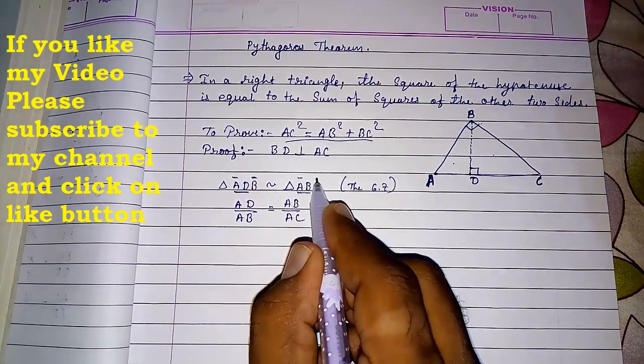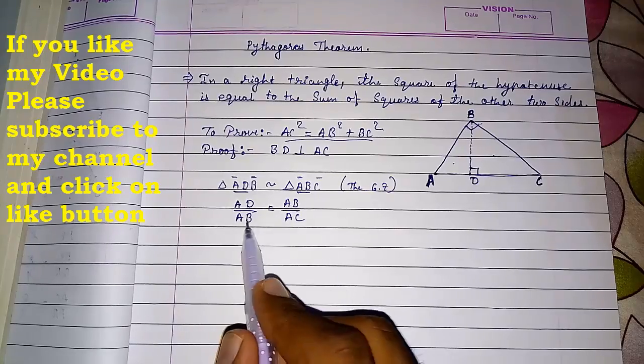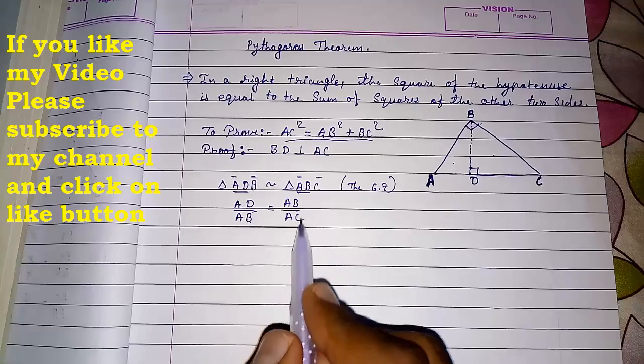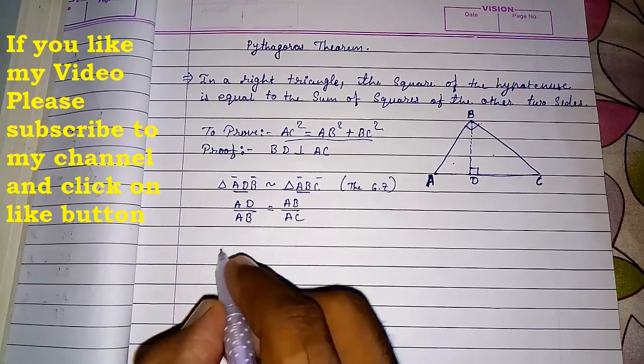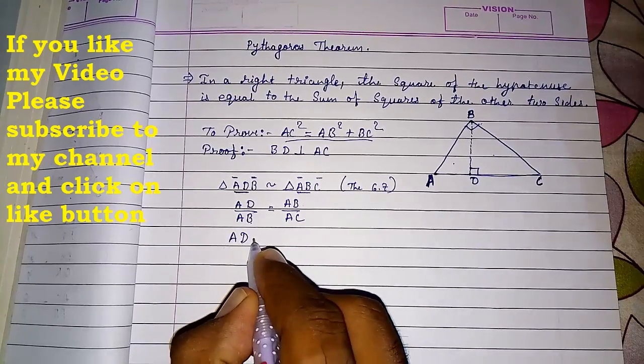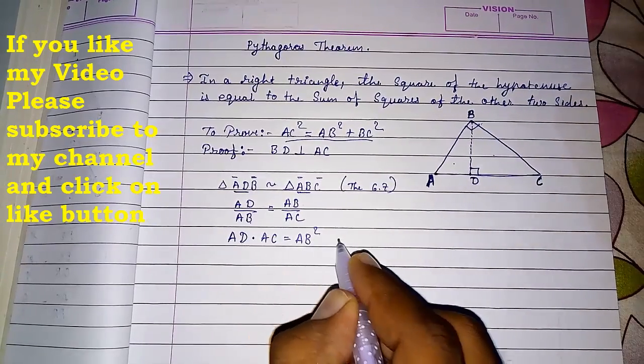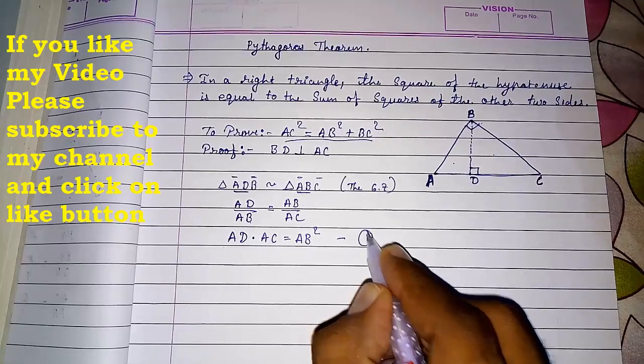So in front of that I have to take this and this. In both I write AB so that I will get AB square. Now I will take this AB here and AC here, so I will get AD into AC equals AB into AB, AB square. Take this as result number one.